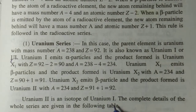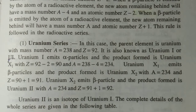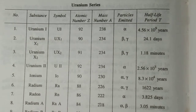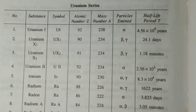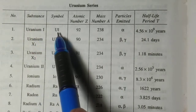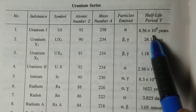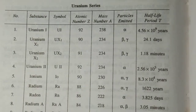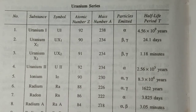Uranium second is an isotope of uranium first, and the complete detail of the whole series is given in the following table. This series is very long due to the long half-life period. You can see uranium first, symbol U-first, 92-238, emits alpha particle. You can write down or simply take a screenshot.